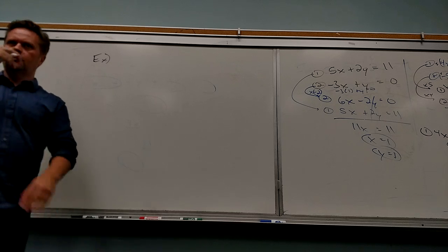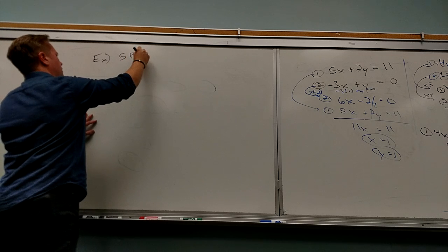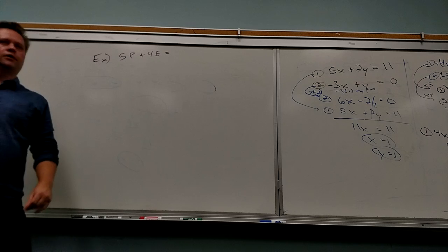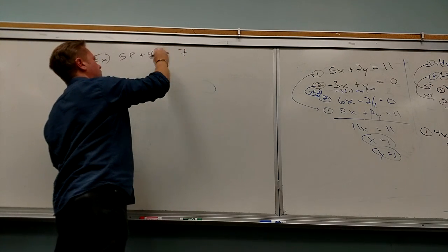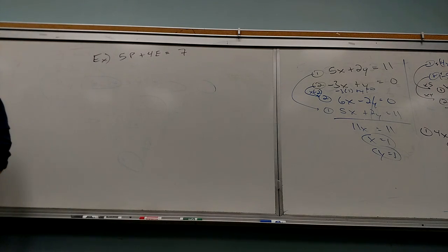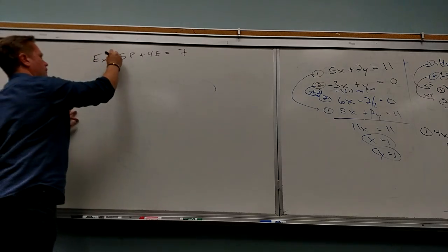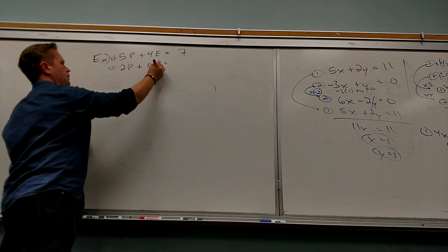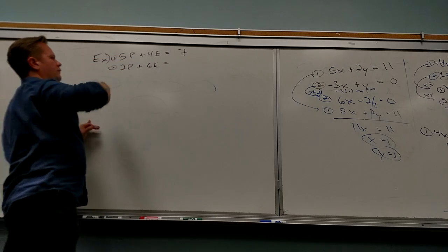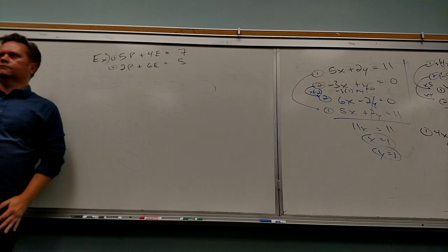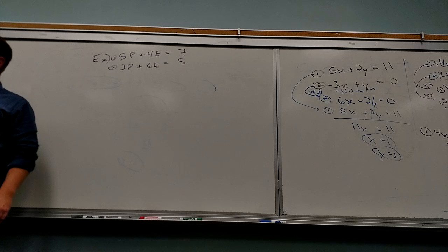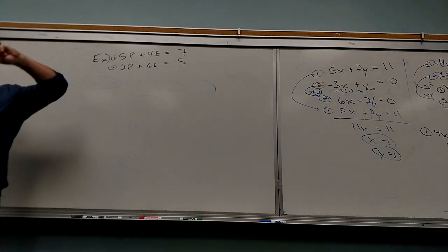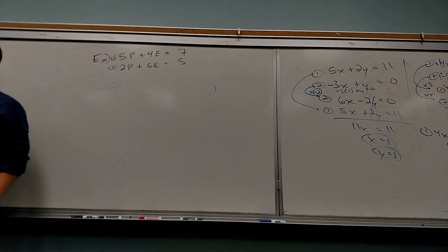These word problems are going to be a little more rigid. So if I buy five pencils and four erasers and that costs seven bucks — and if instead I bought two pencils and six erasers, that would cost five bucks — then the question is how much is every pencil and every eraser? How much does each cost individually? That's basically how a lot of the word problems set up — you buy six hot dogs and seven cokes and it costs this much. How much did each one cost separately?